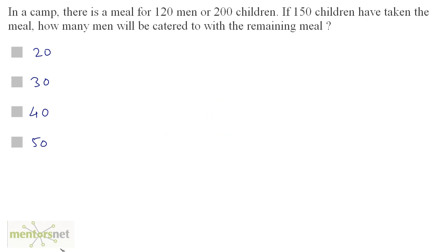In a camp, there is a meal for 120 men or 200 children. If 150 children have taken the meal, how many men will be catered to with the remaining meal? We have two quantities here — men and children. If we increase the amount of meal, both the amount of men or the amount of children will increase. This means that men and children are directly proportional.